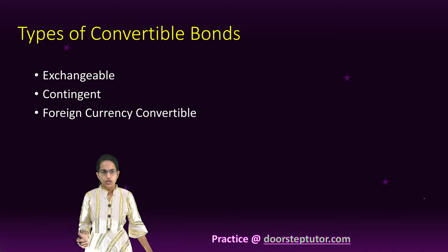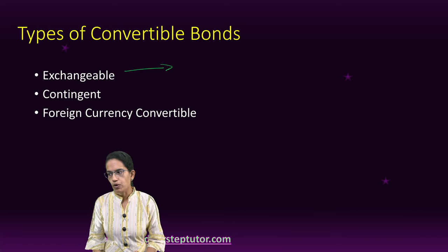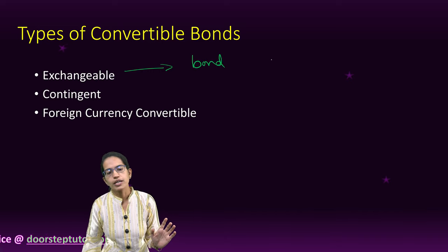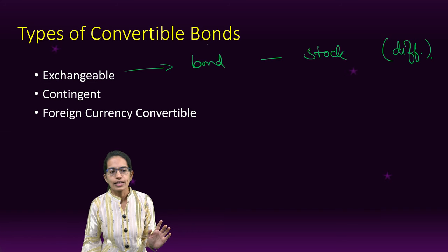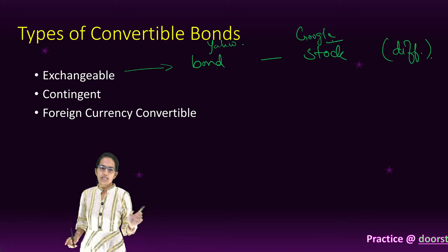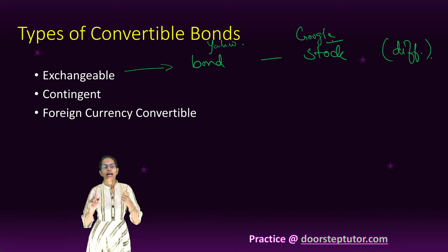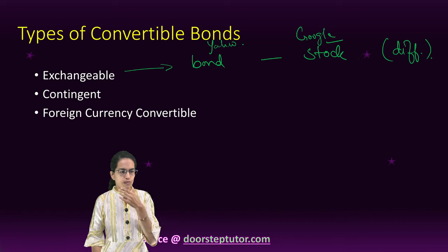Exchangeable convertible bonds are interesting because both the bond and the stock are from different issuers. Let's say one is Yahoo and the other is Google. The two companies issuing the bond and the stock are different, and therefore we call it an exchangeable convertible bond.